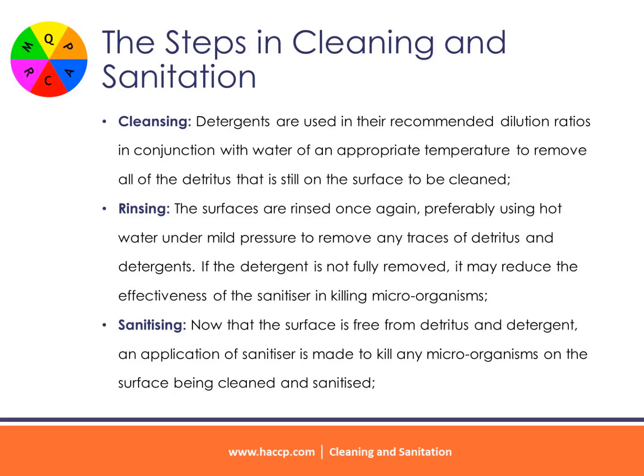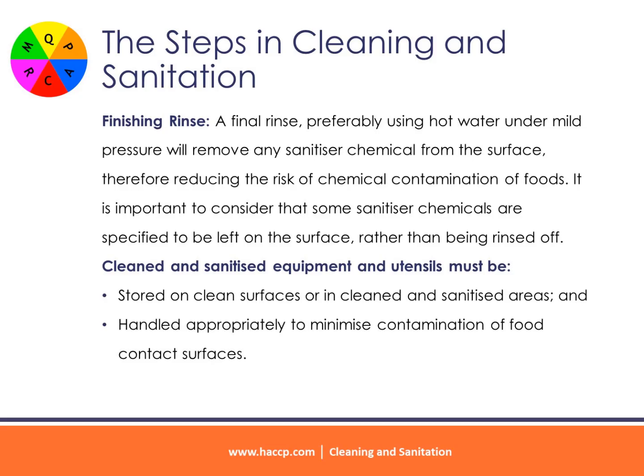Rinsing: surfaces are rinsed again, preferably using hot water under mild pressure, to remove any traces of detritus and detergents. If the detergent is not fully removed, it may reduce the effectiveness of the sanitizer in killing microorganisms. Sanitizing: now that the surface is free from detritus and detergent, an application of sanitizer is made to kill any microorganisms on the surface. Finishing rinse: a final rinse, preferably using hot water under mild pressure, will remove any sanitizer chemical from the surface, therefore reducing the risk of chemical contamination of foods. Note that some sanitizer chemicals are specified to be left on the surface rather than being rinsed off.